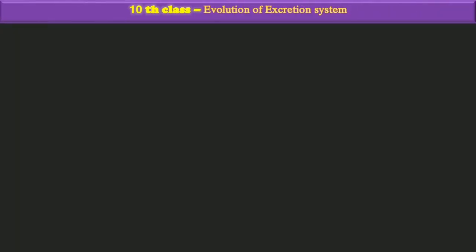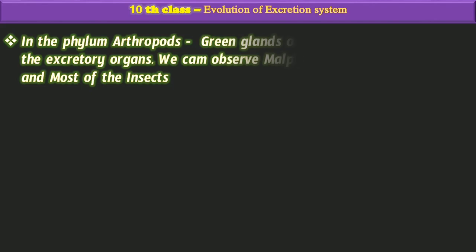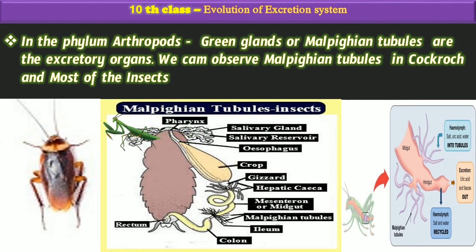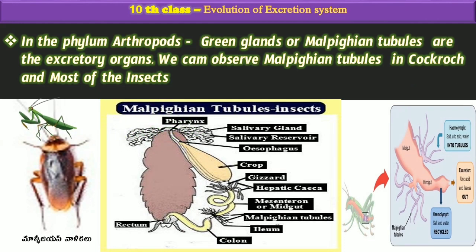In the phylum Arthropoda, which is the biggest phylum in the animal kingdom, we can observe green glands or Malpighian tubules as excretory organs. These Malpighian tubules are found in cockroaches and most insects.